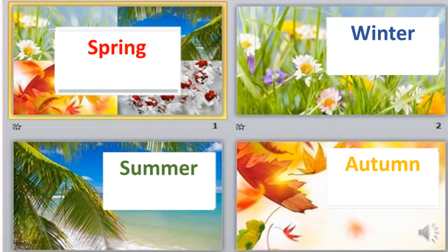In winter season, it is the coldest time of the year and we enjoy indoor games and dry foods. In summer season, it is the hottest time of the year. And in autumn, it is a beautiful season because the leaves change color to yellow and brown and fall down.